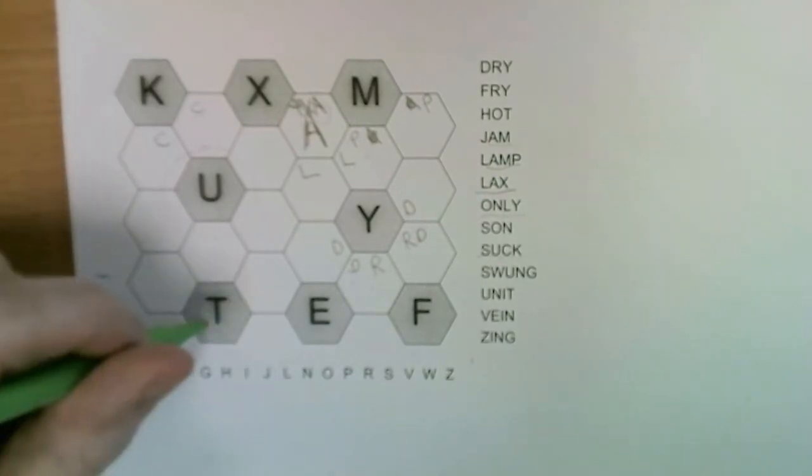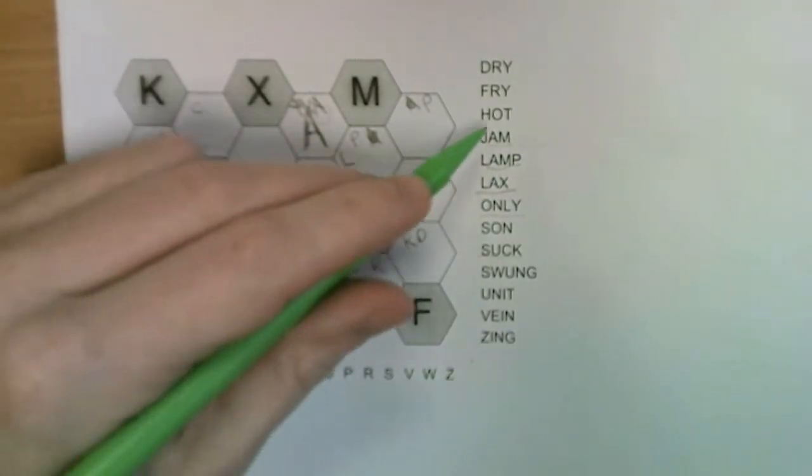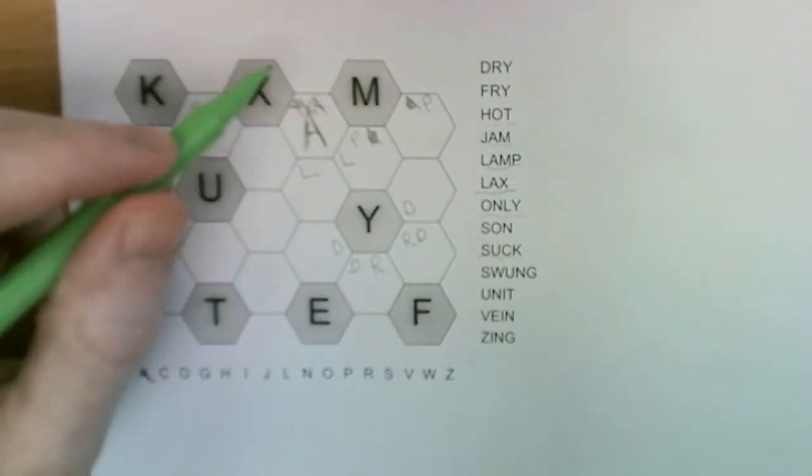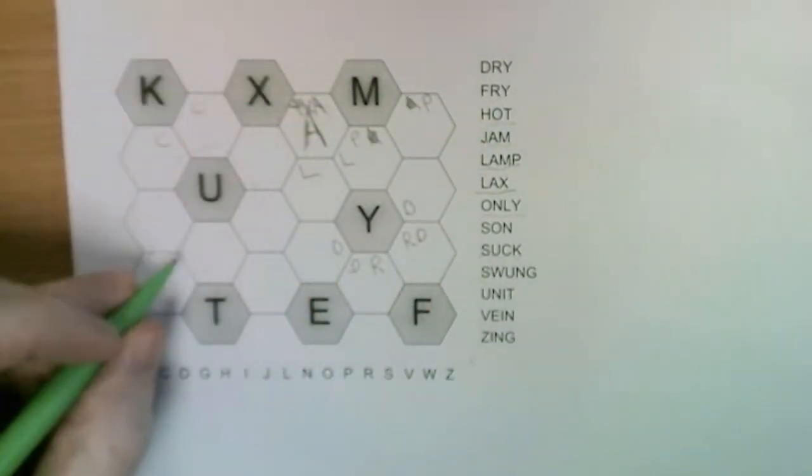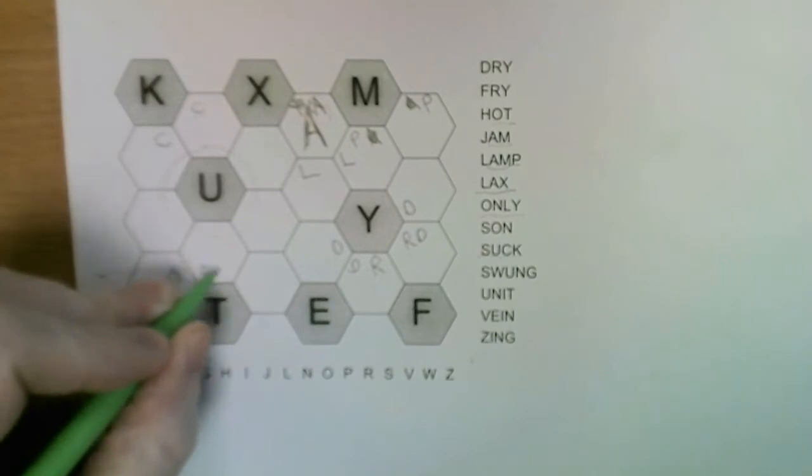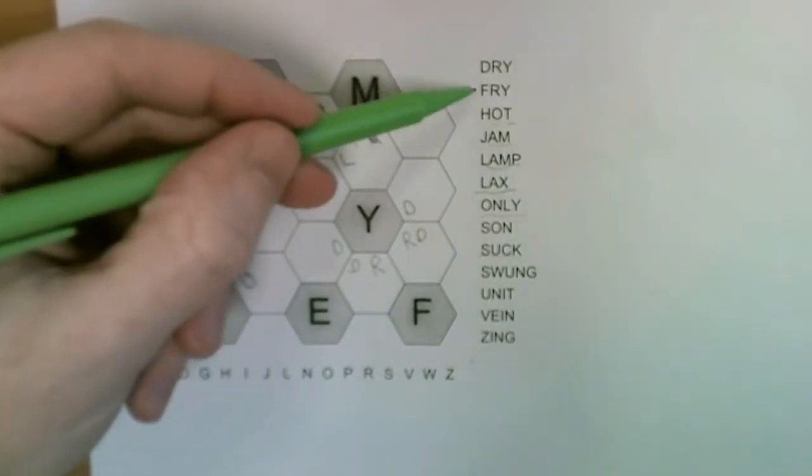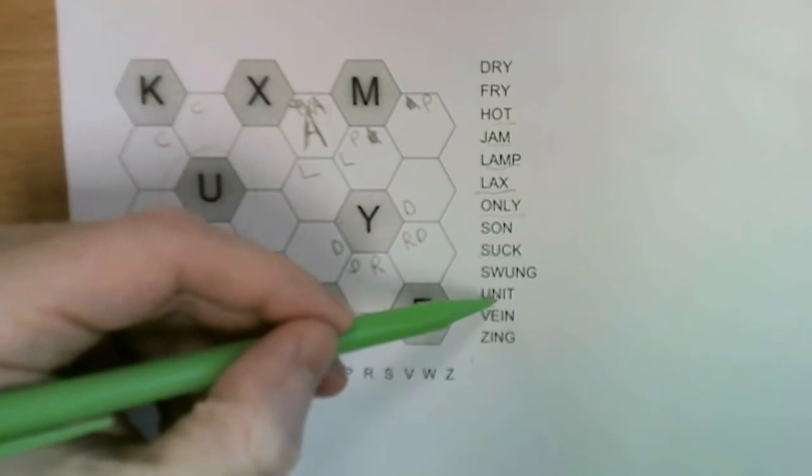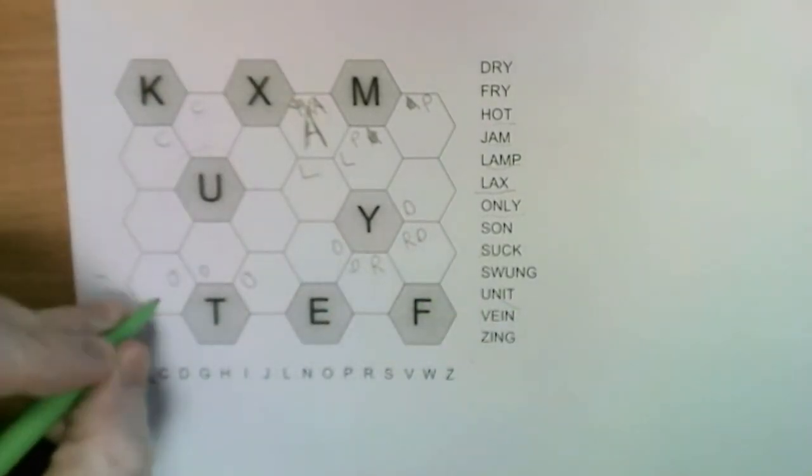Let's come down here and look at the T. So we know that has to neighbor an O, so the O goes in one of these three. Are there any other T's? Yes, so it also must neighbor the I.